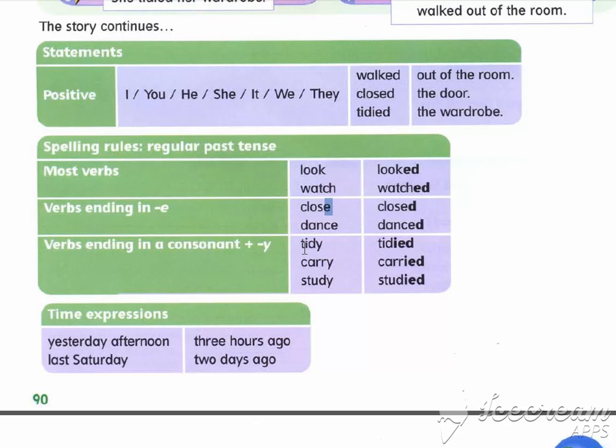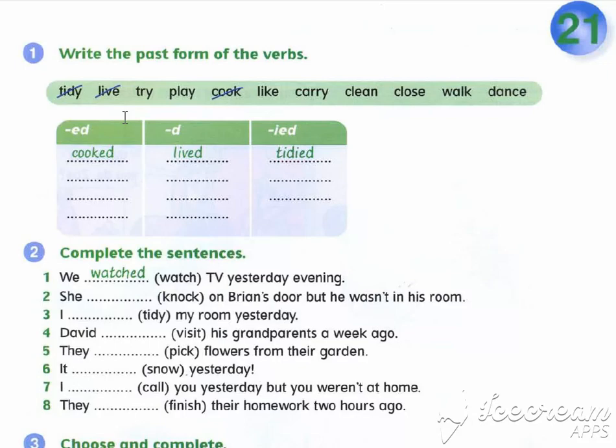Look at... Якщо слово закінчується на Y, а перед Y йде приголосна, вона замінюється на I, і лише потім додається ED. Now, let's look and complete exercise 1.